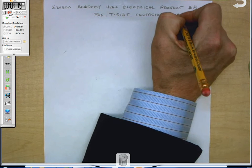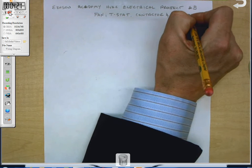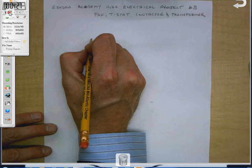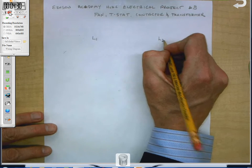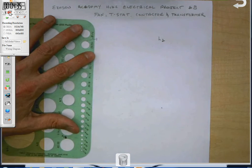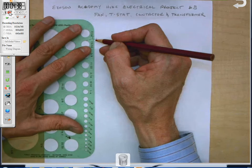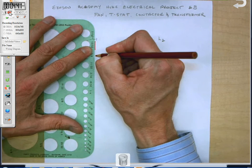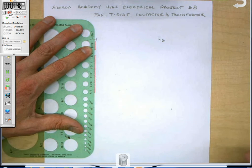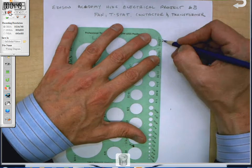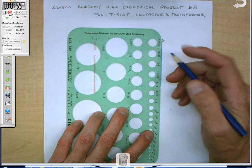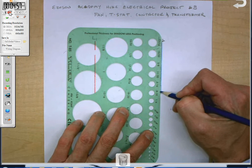Other words known as the fan, T-stat, contactor, and transformer project. Now, I'm going to go ahead and put the rungs first on this one. I'm going to put L1 over here, L2 over here, and I'm going to go ahead and draw them down. Some people find this is an easier way to build a wiring diagram. Now, I know I'm going to put a switch in, so I'm going to leave a little space there for a switch later on.